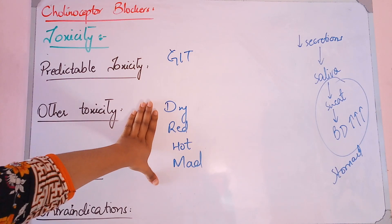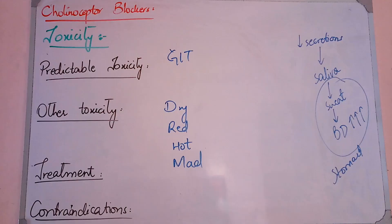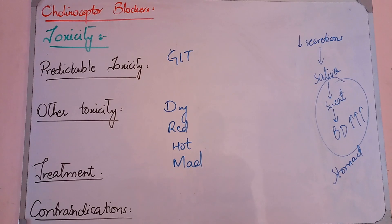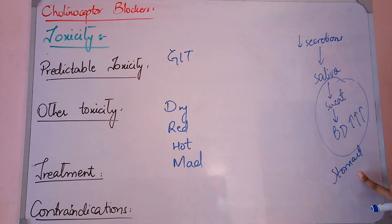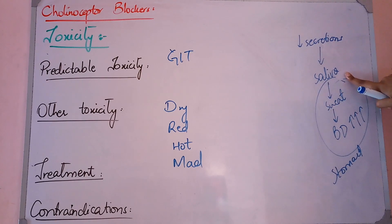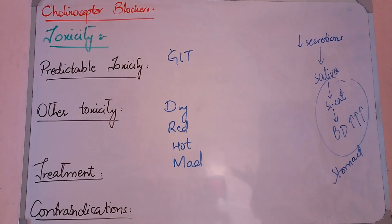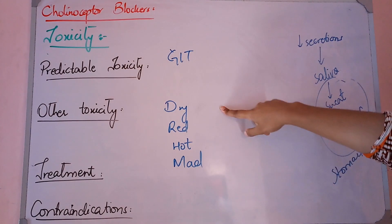When toxicity is caused by any muscarinic antagonist, these four features appear. All secretions normally increase under the parasympathetic system — GIT secretions, saliva, and sweating. But when we block the parasympathetic system, all secretions decrease. GIT secretions decrease, stomach acid doesn't secrete, food doesn't digest, saliva decreases causing dry mouth. Since there is no secretion in the entire body, it becomes dry. The first mnemonic is: Dry as a bone.